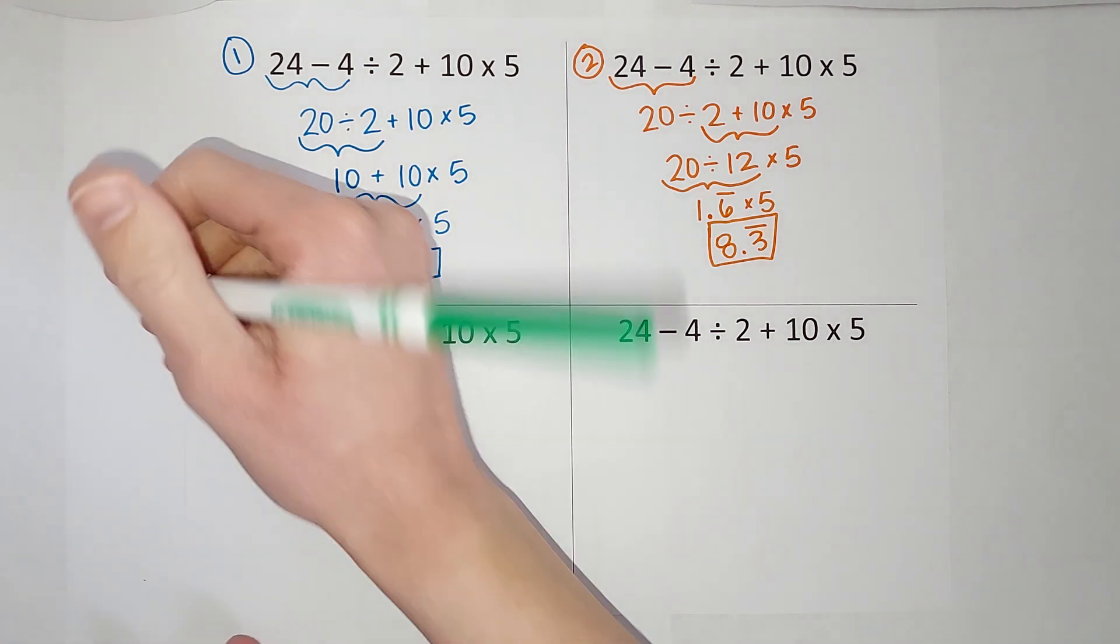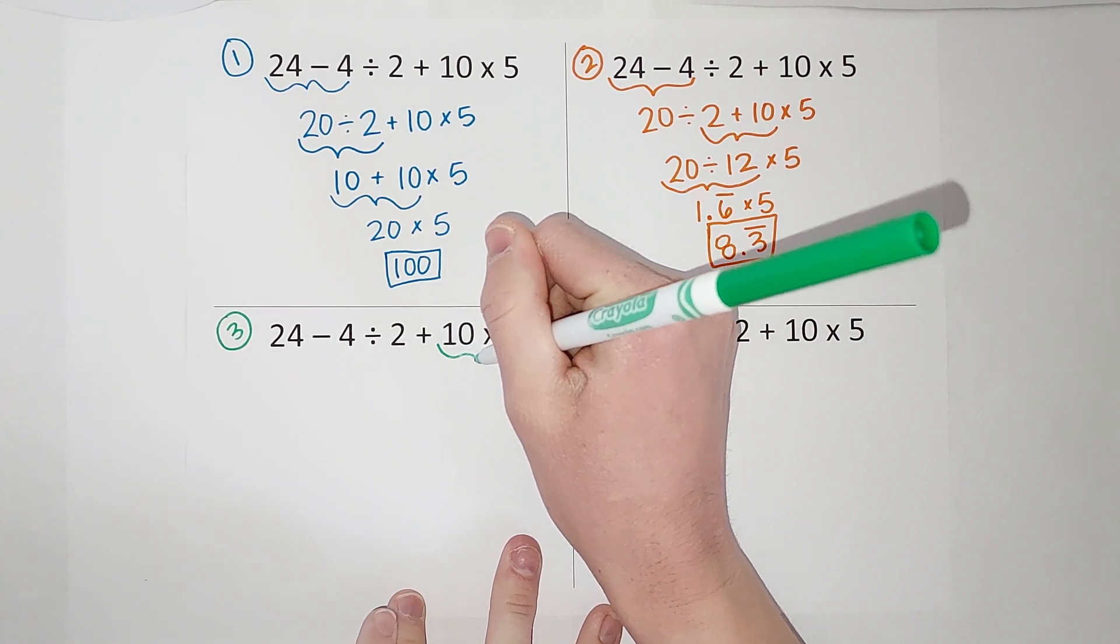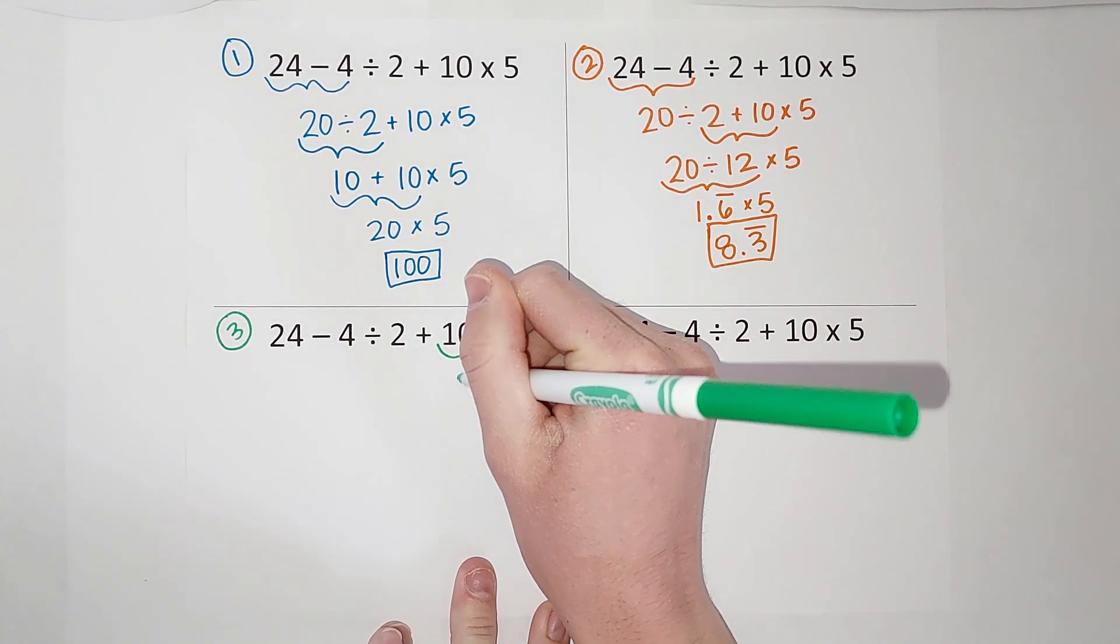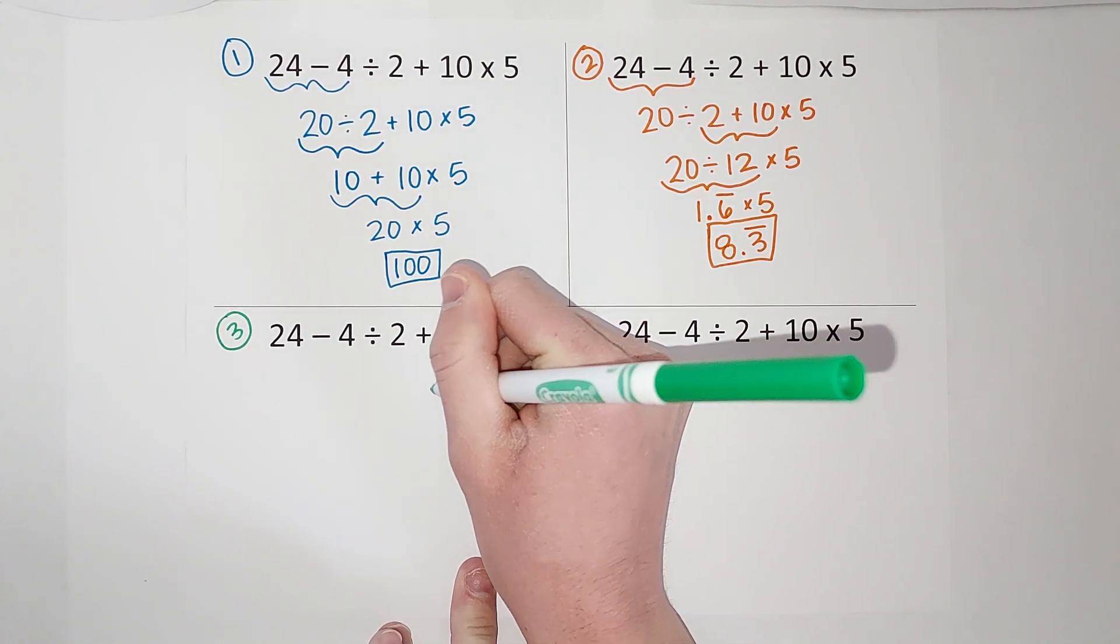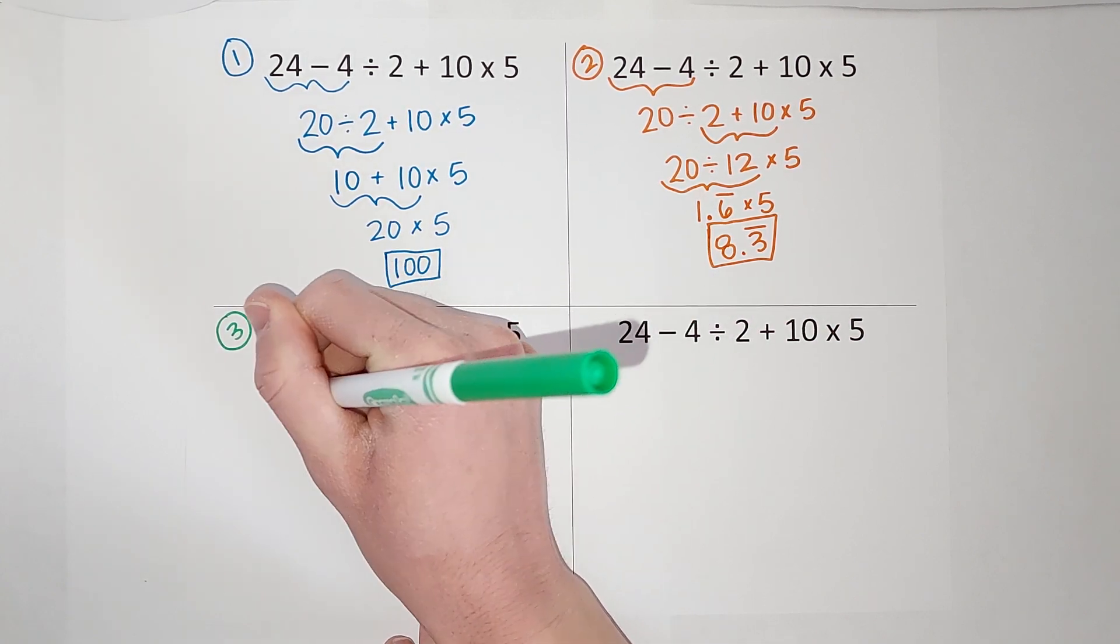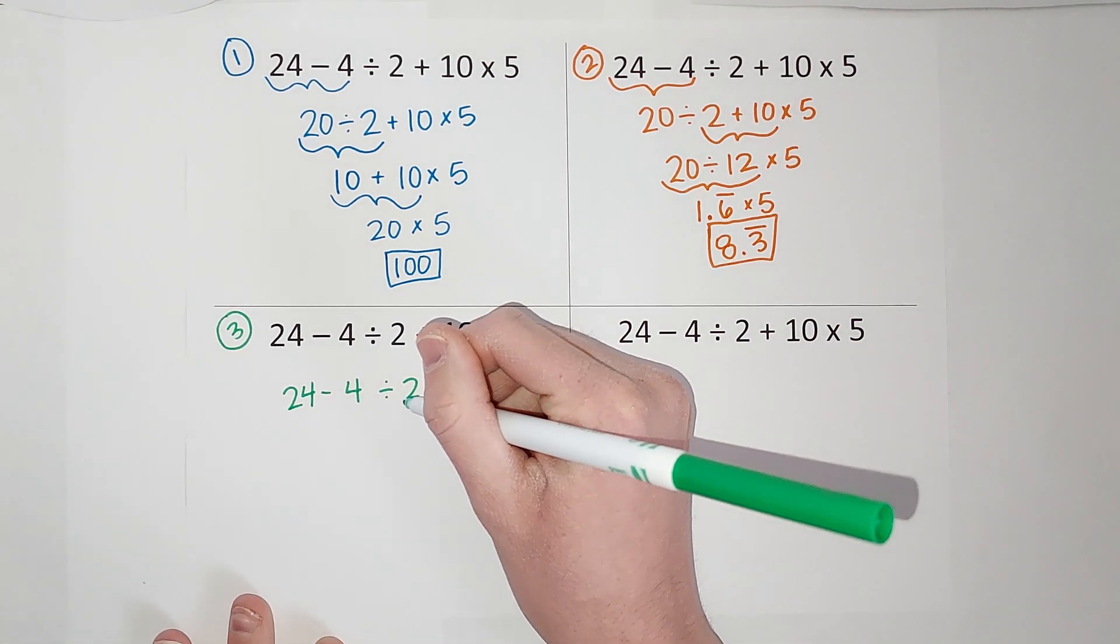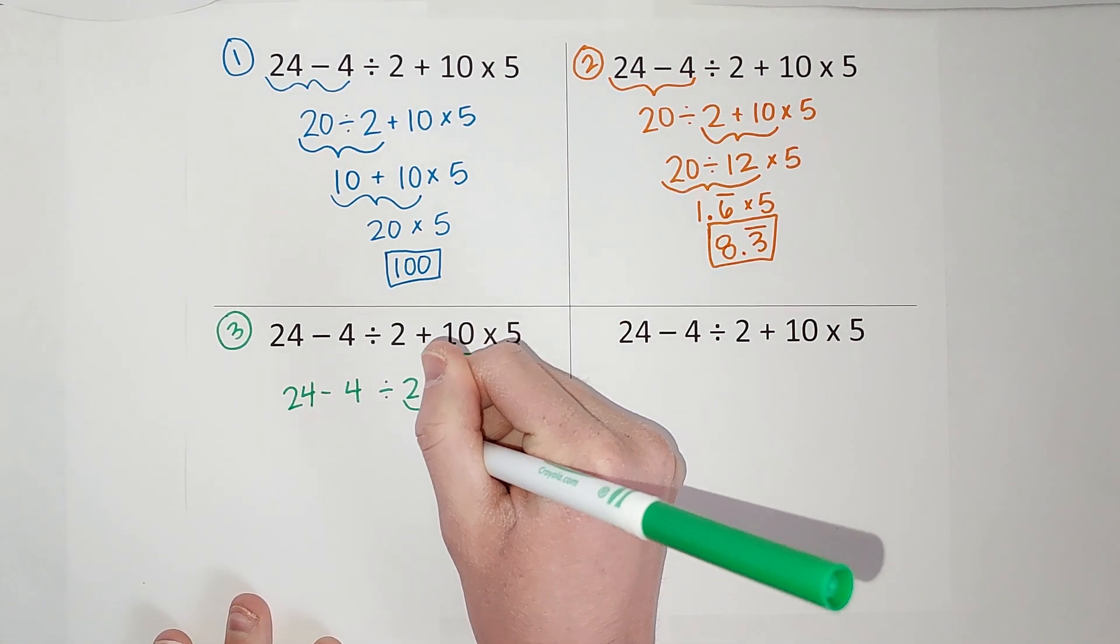She says, okay, I see what you did there. Then she calls up the next kid and says, how did you get your answer? He says, well, I went right to left. So, 10 times 5 is 50. I'm writing backwards, this is weird.